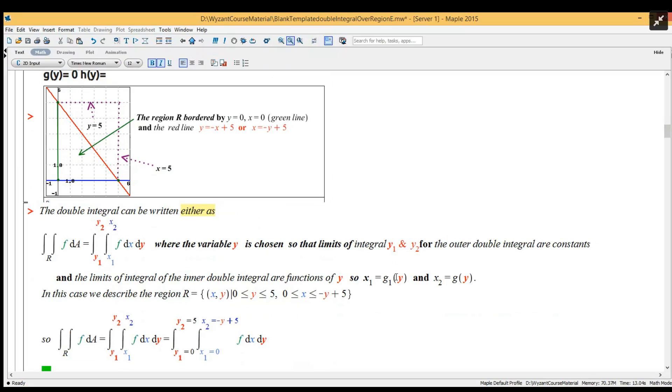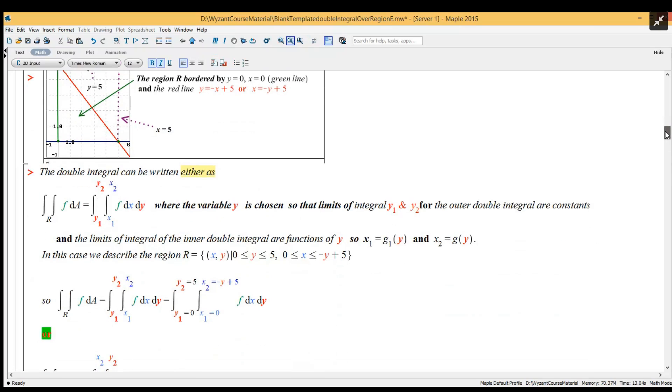And the limits of integral of the inner double integral are functions of x, so x₁ equals g₁(y) and x₂ equals g₂(y). In this case, we would just describe the region R as a collection of (x,y) such that y is greater than zero and five.